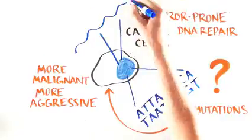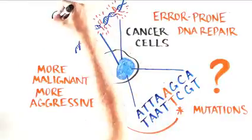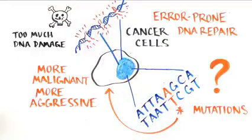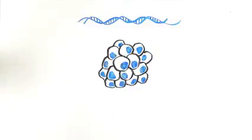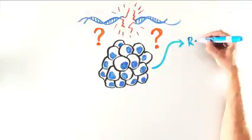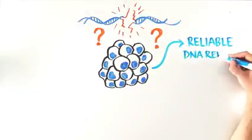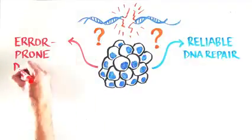However, DNA damage is a double-edged sword, and too much DNA damage can also kill cancer cells. So what if we could figure out if a cancerous tumor is using the reliable DNA repair pathway, or the error-prone one?